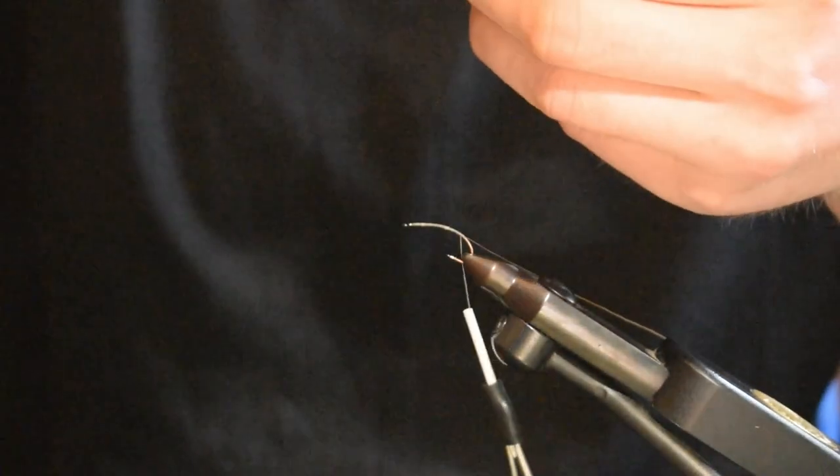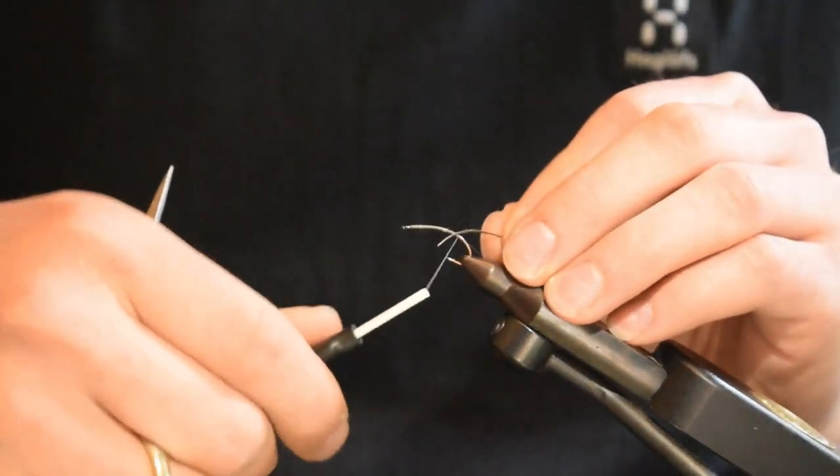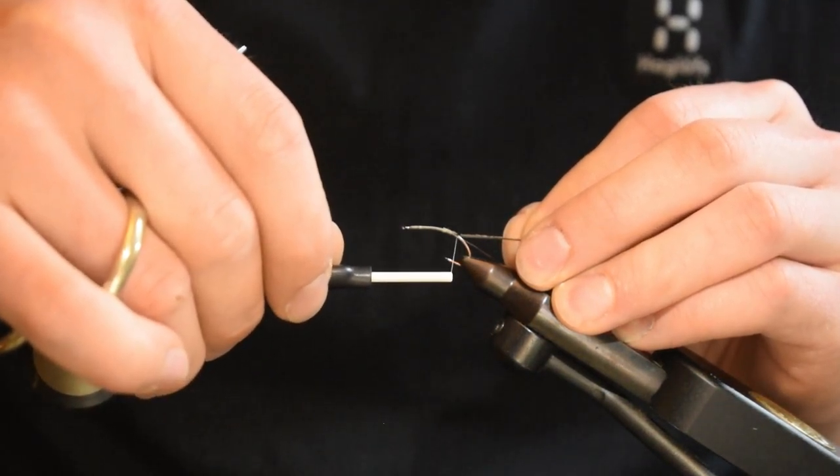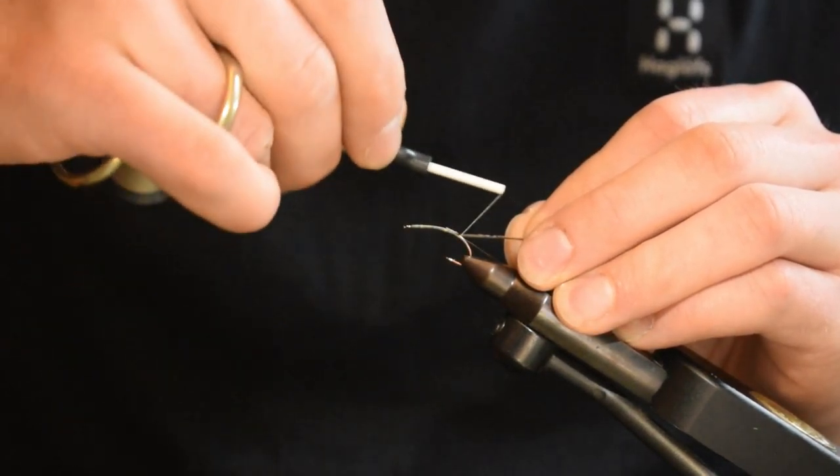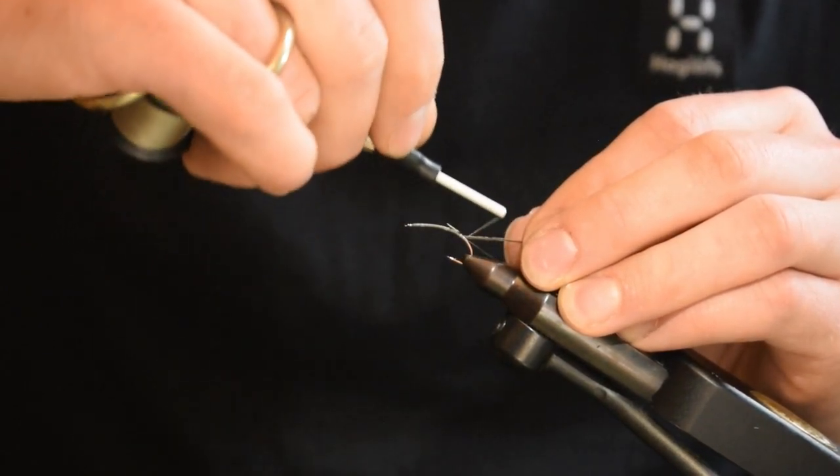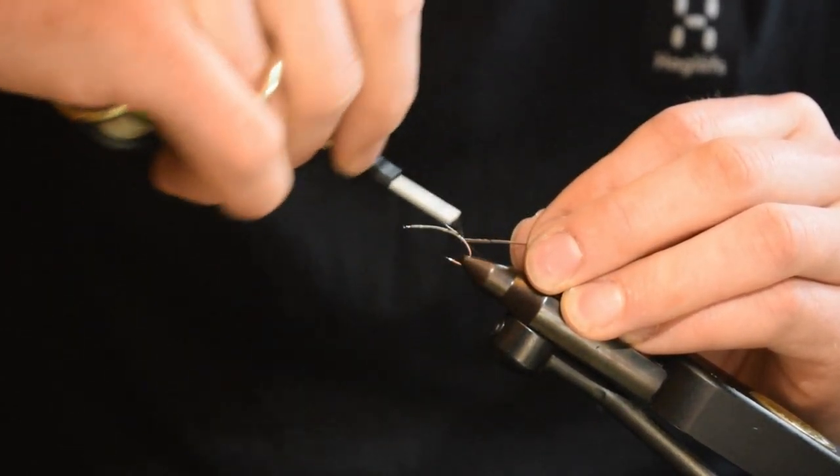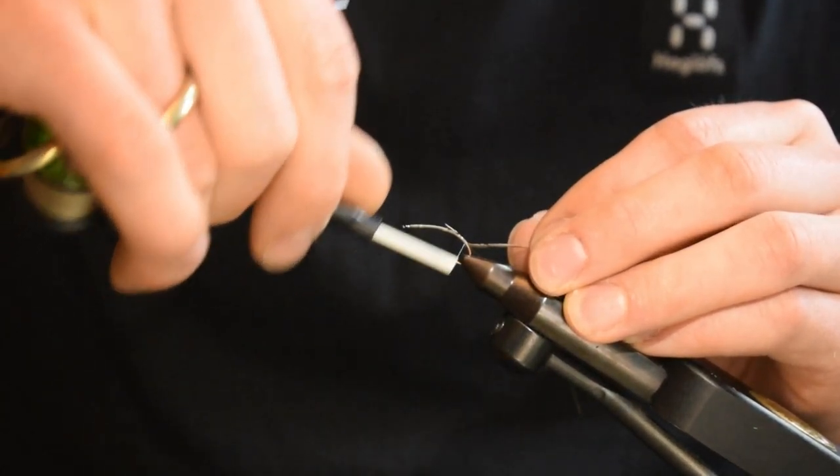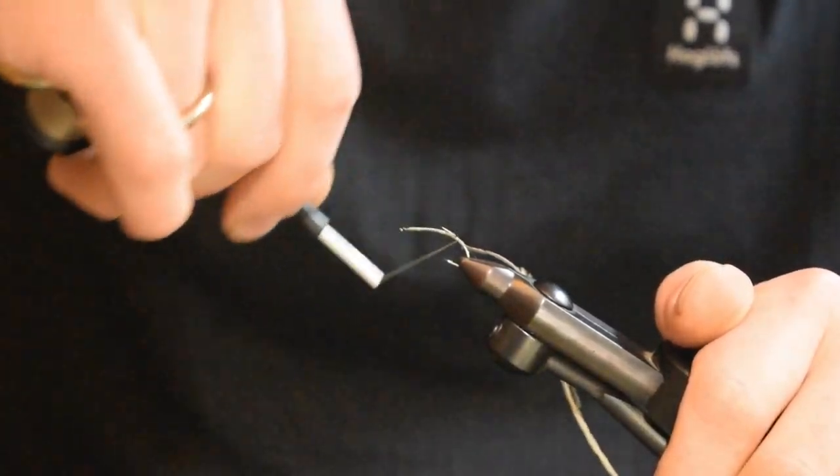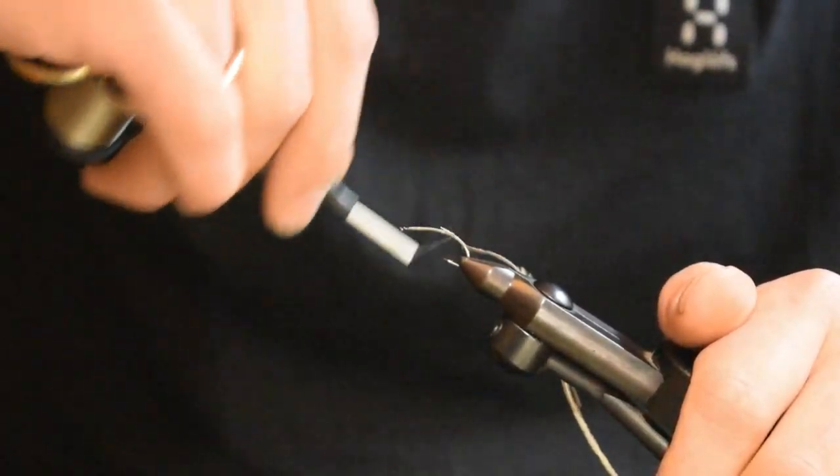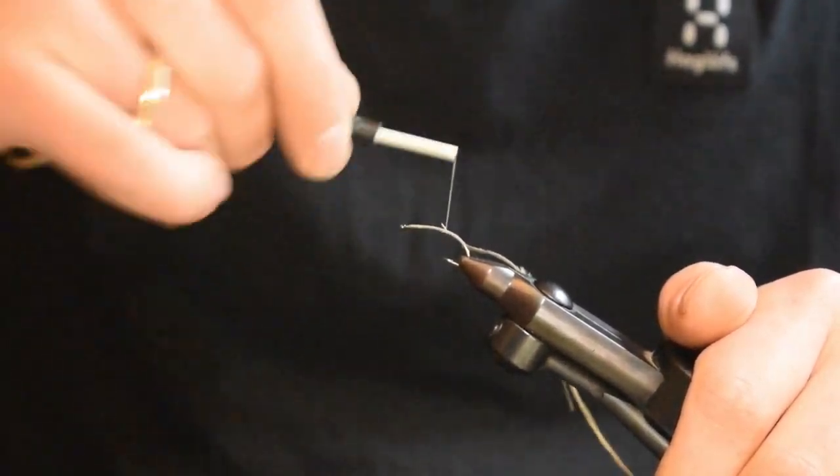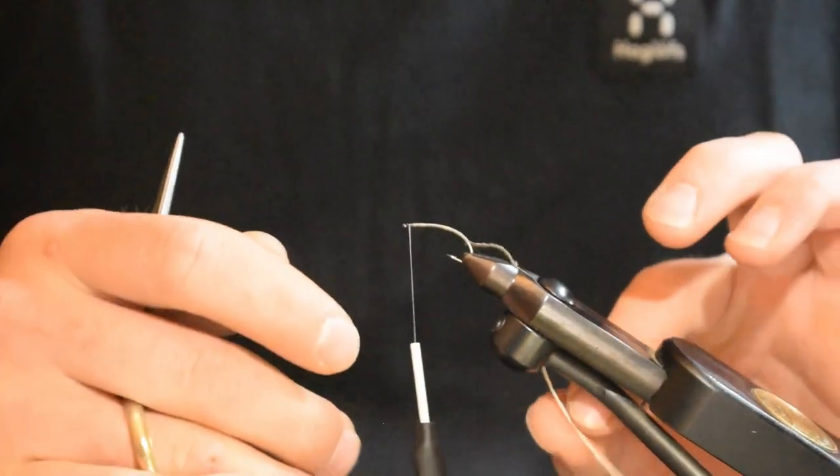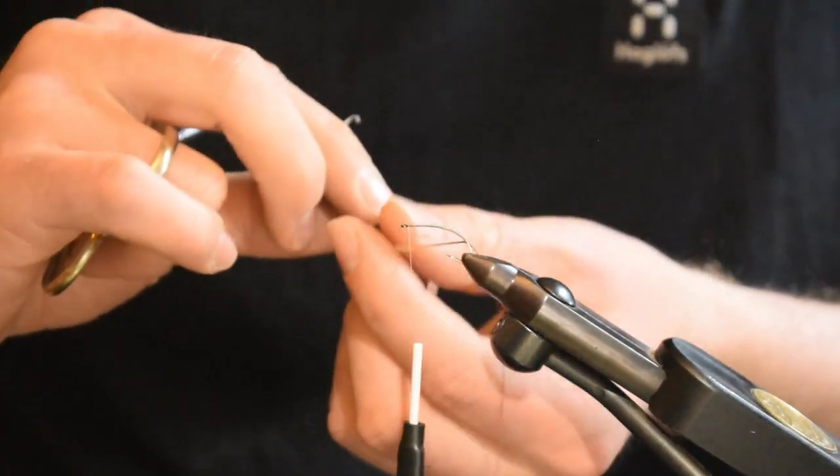We're going to tie in a piece of ostrich hurl in natural color. Just tie it in, pull the tag end so we're going to have a long piece of hurl to use as the body. Tie down to where the bend of the hook is very critical, and open the thread.